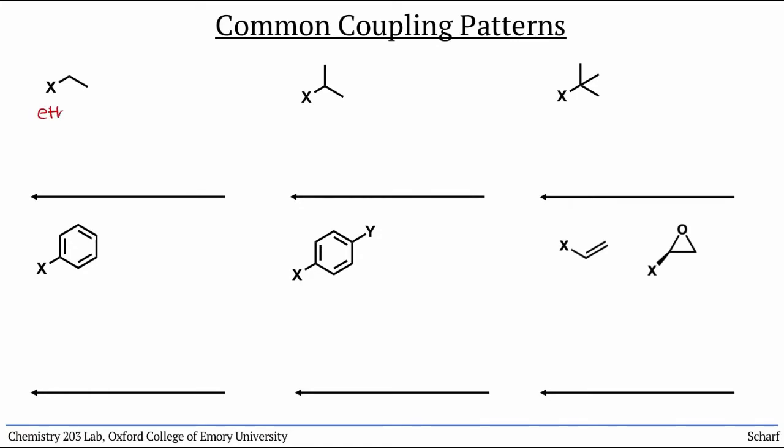Ethyl groups show a particular pattern of an upfield triplet for the 3 CH3 hydrogens, and a downfield quartet for the 2 CH2 hydrogens.